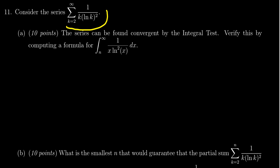We're given the series where we take the sum where k equals 2 to infinity of the sequence 1 over k times the natural log of k squared.